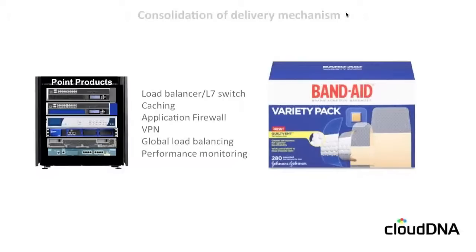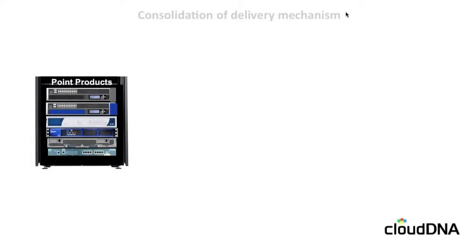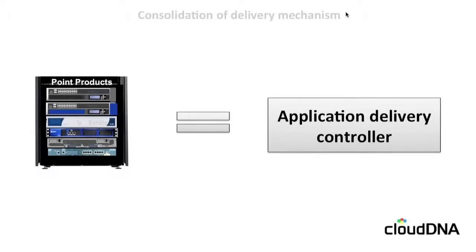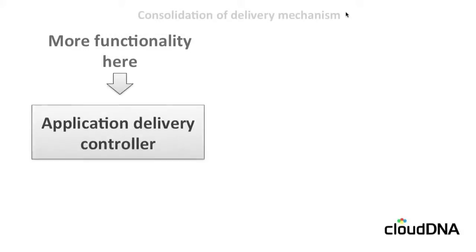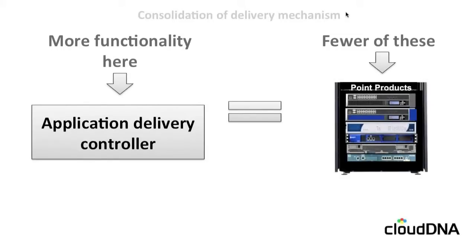The problem with these point products is that each one takes time to learn, manage, and power. We need to understand how these devices talk to one another in a stack, and clearly there's a physical space required to put all of these devices in a data center. So the idea behind NetScaler is a very simple one: rather than having these multiple individual point products, we condense all of that functionality into a single device known as an application delivery controller. The more functionality we can squeeze into that ADC, the fewer point products are required to support the service and maintain the SLAs.